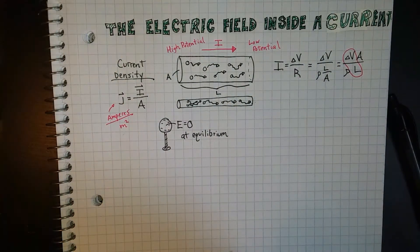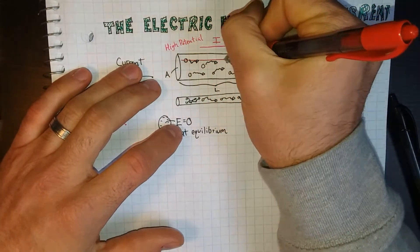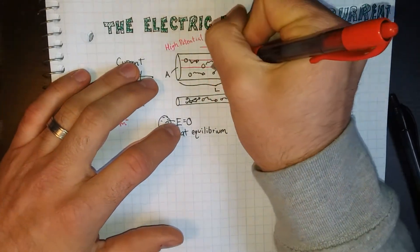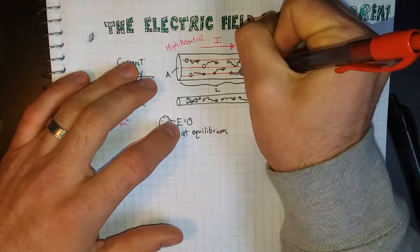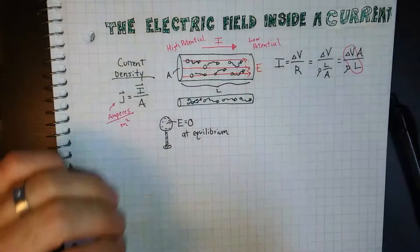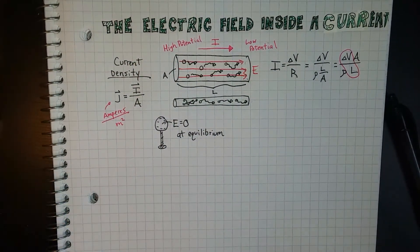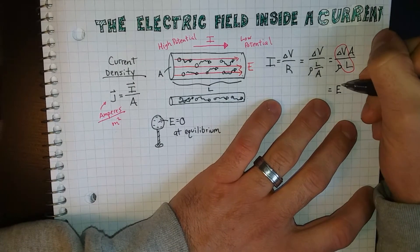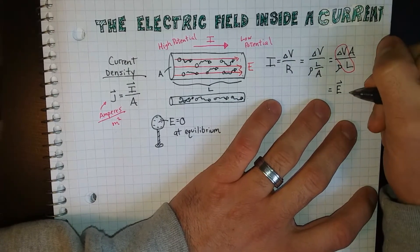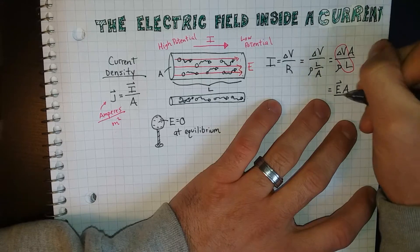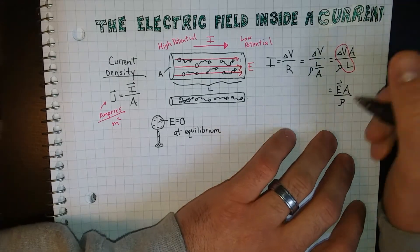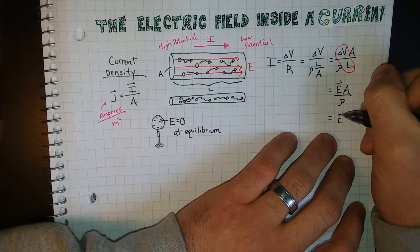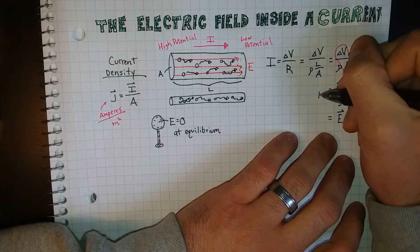There is an electric field inside here that's forcing the charges to go in a certain direction. That is E. So let me take that term, and let me just call that the electric field times the area over rho. Or, I'm left with this, and that's all equal to I.